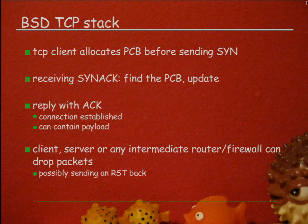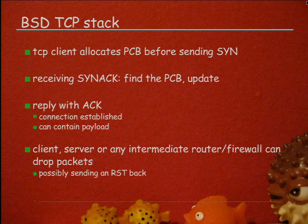The first ACK from the client seldom does but can contain payload — that's an important bit. The server or any intermediate router, firewall, or device in the path can drop packets. You might get a TCP RST back, an ICMP error message, or nothing at all.